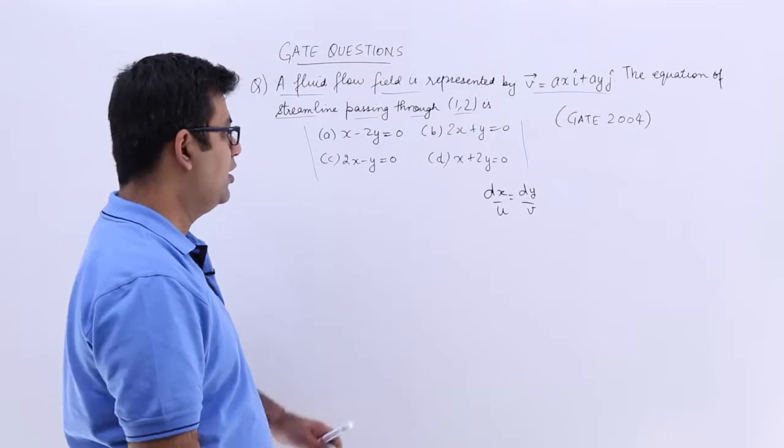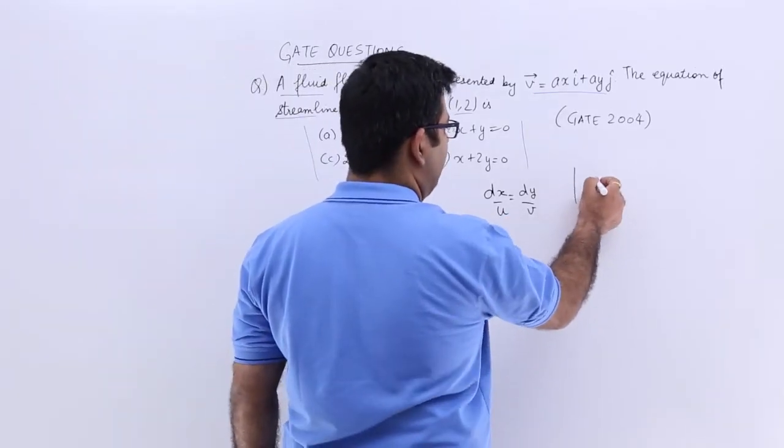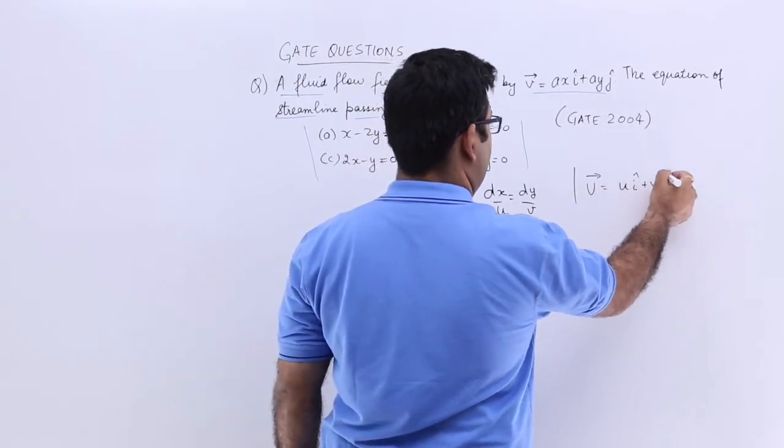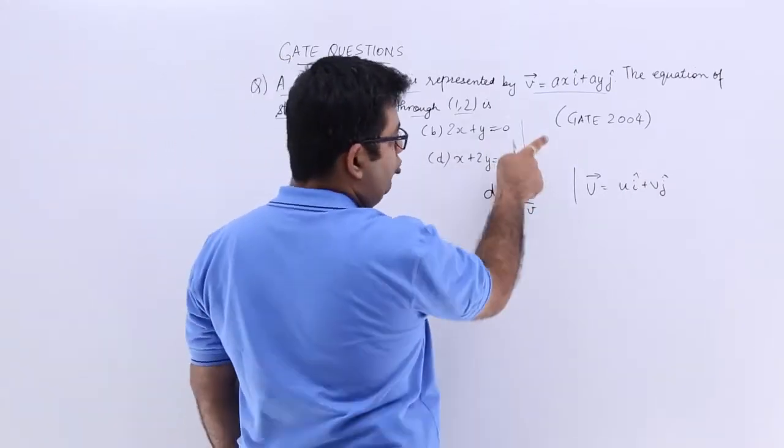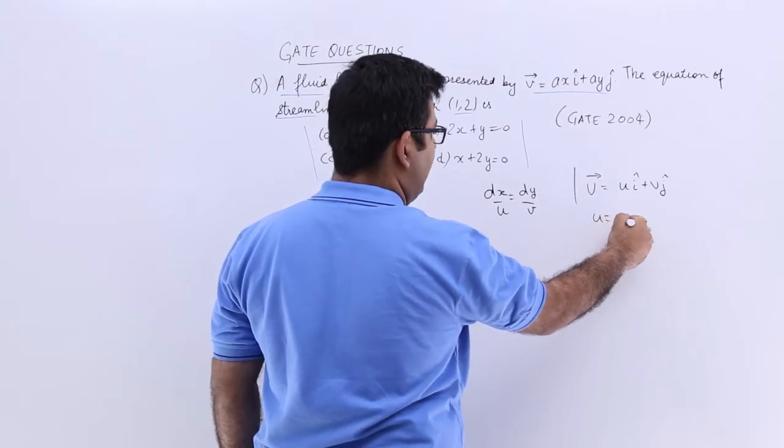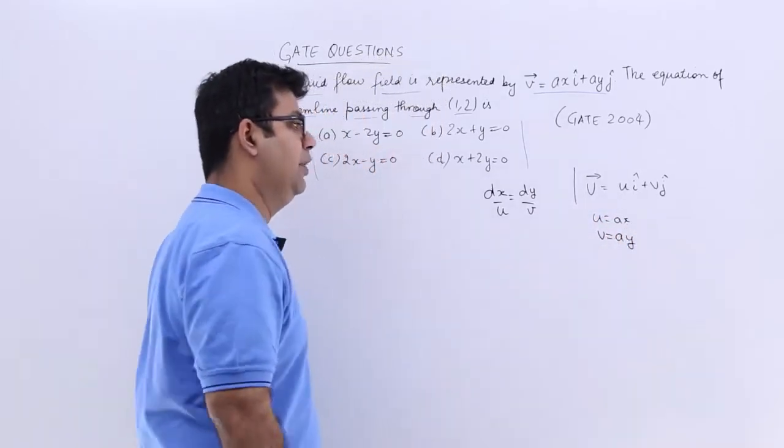Now we need to recognize u and v. So if you write down the general expression for a velocity vector, it is u i cap plus v j cap. So when you compare these two equations, you get u as ax and v as ay. A can be any constant.